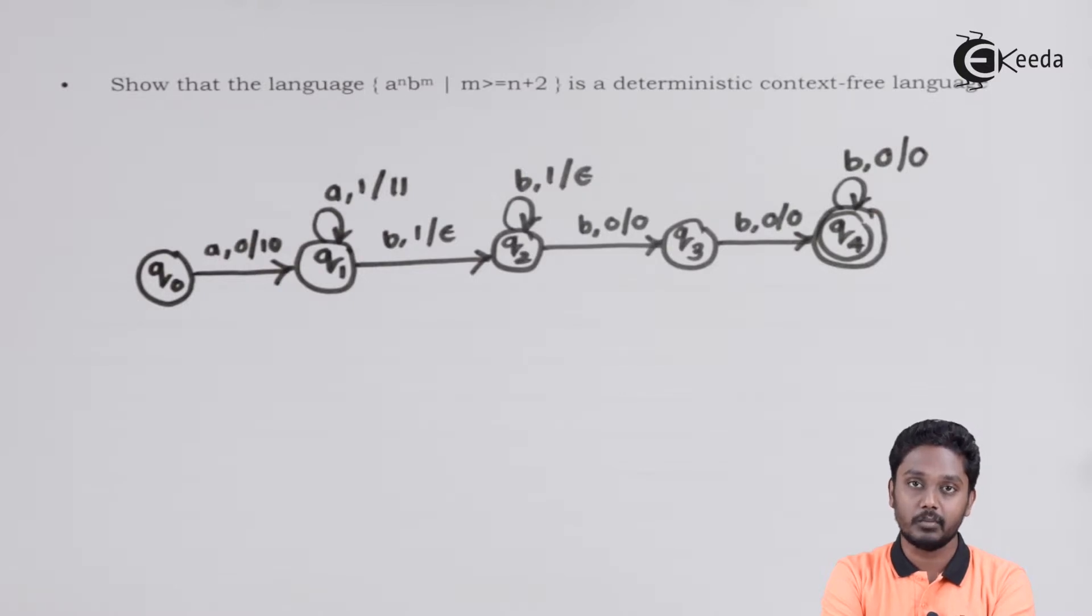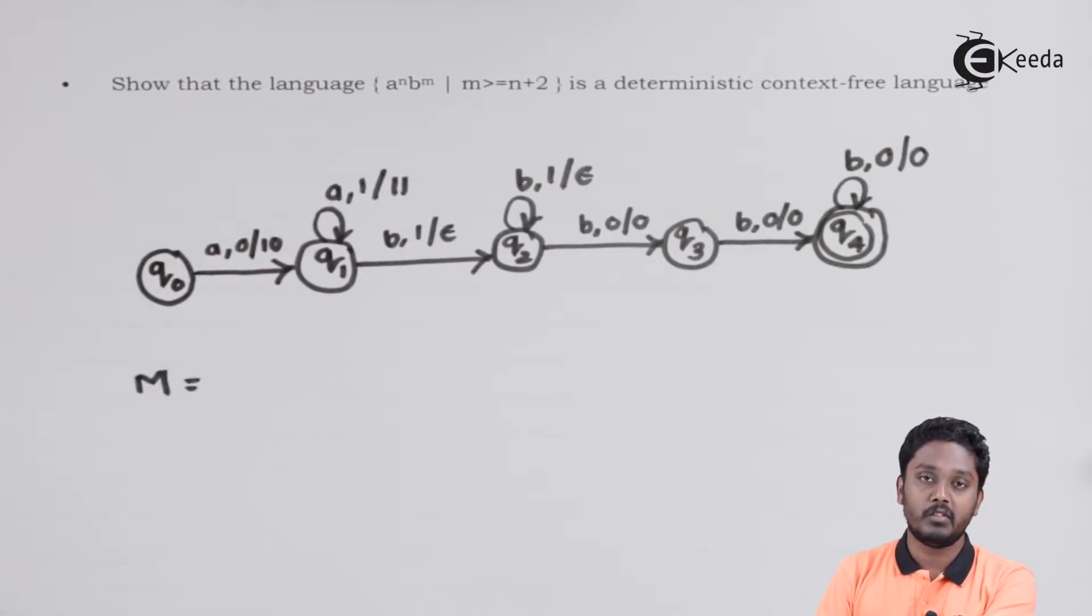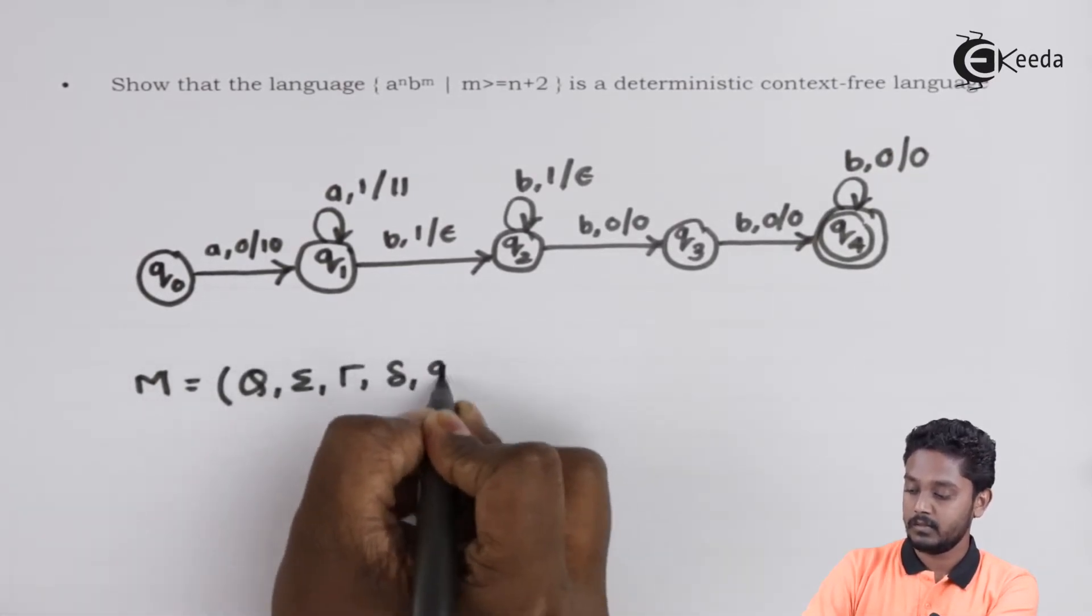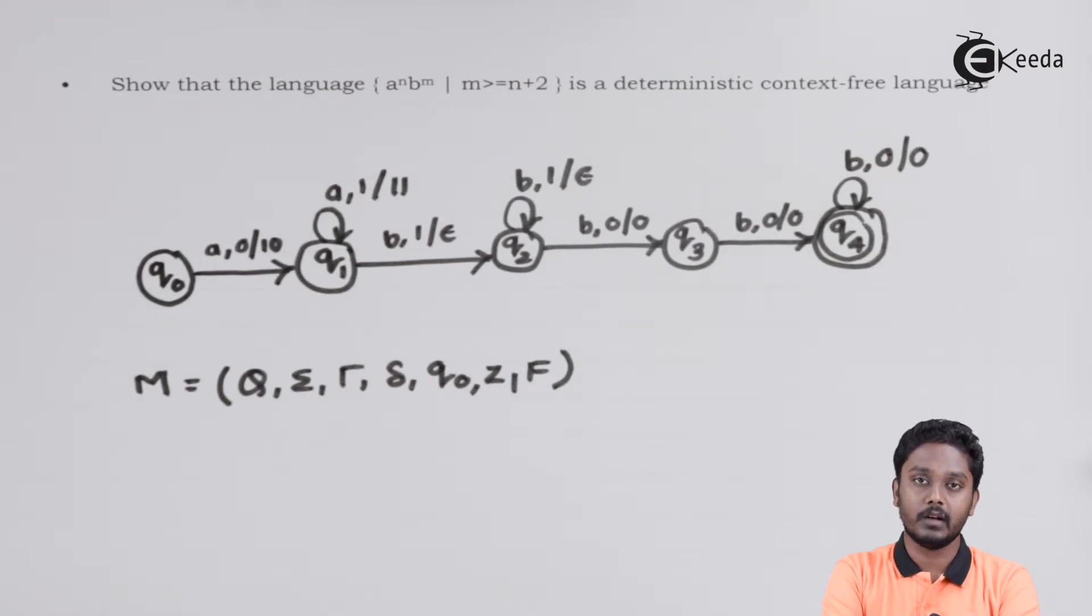Let us see the mathematical components of this machine. Naming this machine M, we know these are the components. So over here, Q will contain the states from Q0 to Q4.